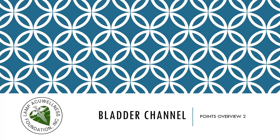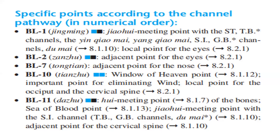Let's discuss the Bladder Channel Points Overview, Part 2. Specific points according to the channel pathway in numerical order. Bladder 1 is the Jiao Wei meeting point with the Stomach, Triple Burner Channel, Yin Chao Mai, Yang Chao Mai, Small Intestine, and Gallbladder Channels. It is a local point for the eyes.